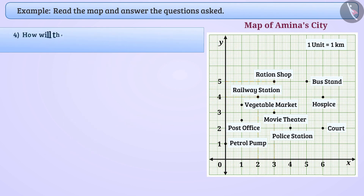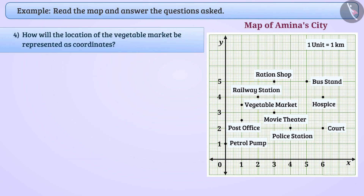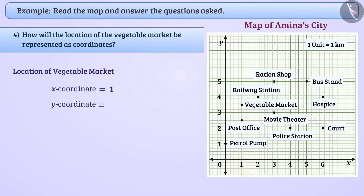How will the location of the vegetable market be represented as coordinates? The location of the vegetable market can be represented by x-coordinate 1 and y-coordinate 3.5. So, the location of the vegetable market will be represented by (1, 3.5).